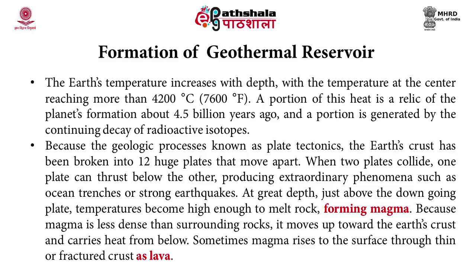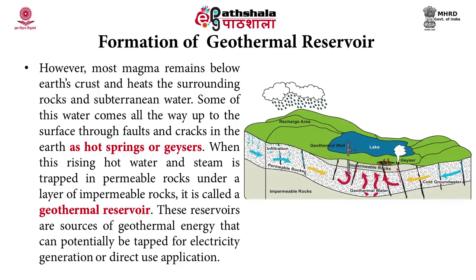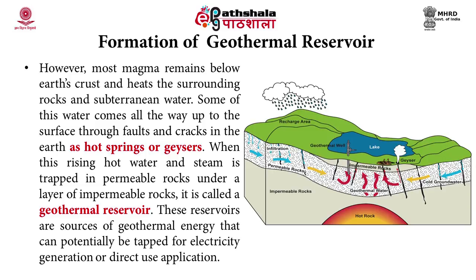Because magma is less dense than the surrounding rocks, it moves up toward the earth's crust and carries heat from below. Sometimes magma rises to the surface through thin or fractured crust as lava. However, most magma remains below the earth's crust and heats the surrounding rocks and subterranean water. Some of this water comes all the way up to the surface through faults and cracks in the earth as hot springs or geysers. When this rising hot water and steam is trapped in permeable rocks under a layer of impermeable rocks, it is known as a geothermal reservoir.